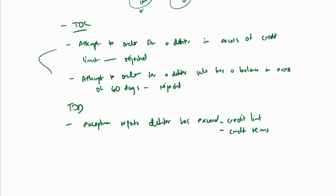Getting exception reports will help me to prove that there could be a concern with the recoverability of that debtor. If he is not settling a balance that is long overdue and has exceeded the credit terms set for him, that suggests we believed he would be able to pay but there is now a concern around recoverability.